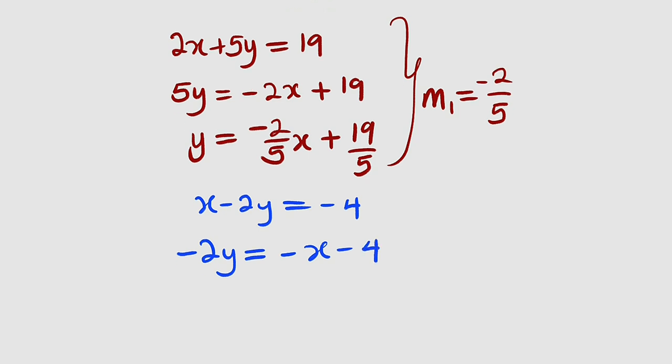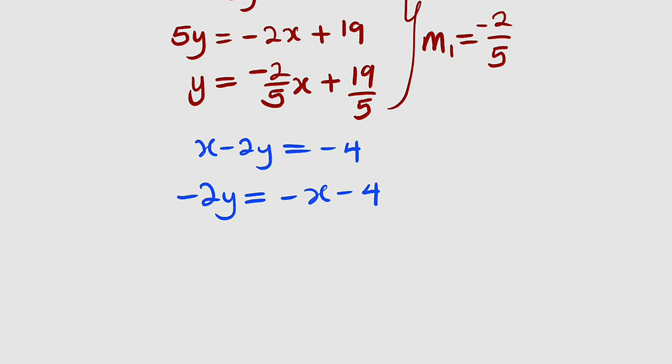If we divide both sides by the coefficient of y, which is negative 2, all these negative signs will turn to positive. We have y equal to 1 divided by 2x, then plus 4 divided by 2 is 2. You can see the slope here. m2 is equal to 1 divided by 2, which is the coefficient of x.